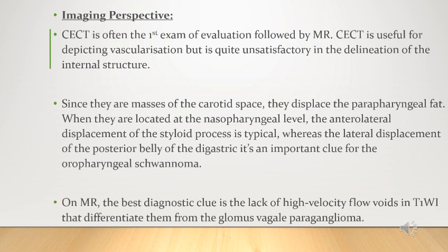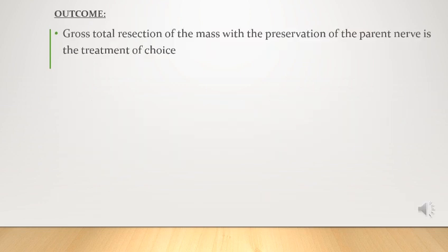Gross total resection of the mass with preservation of the parent nerve is the treatment of choice for vagal schwannoma.